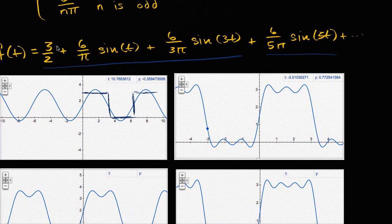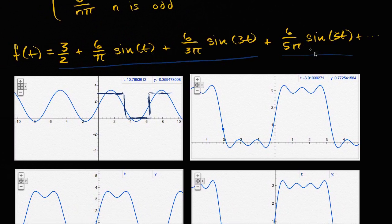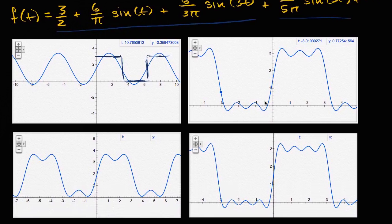And then if you add to what we already wrote down, if you were to add six over 7π times sine of 7t, it looks even more like a square wave. So this is pretty neat. You can visually see that we were actually able to do it, and it all just fell out from the mathematics.